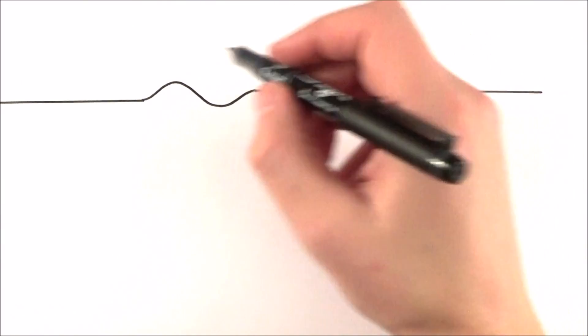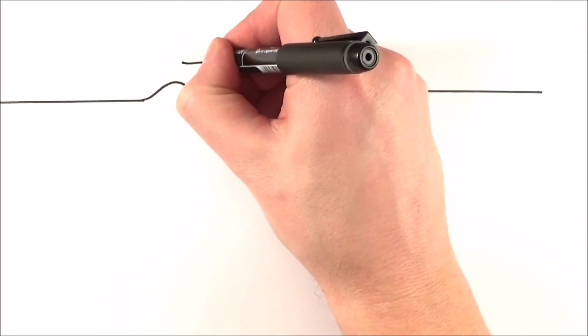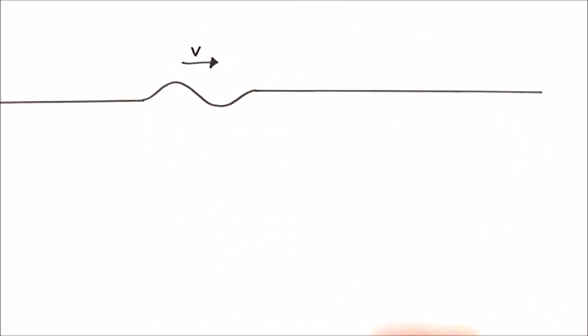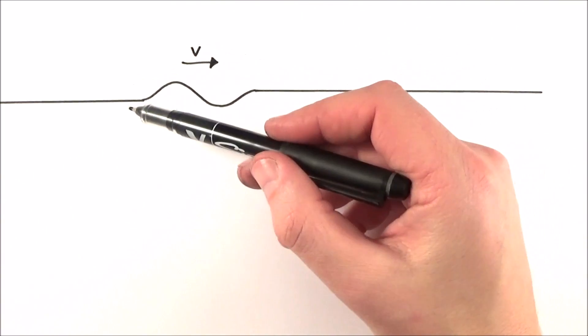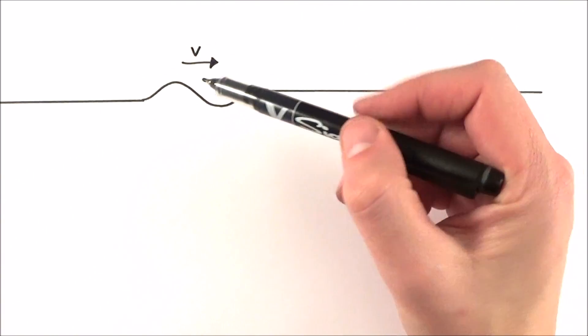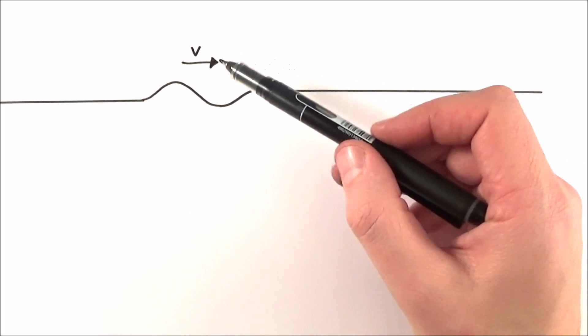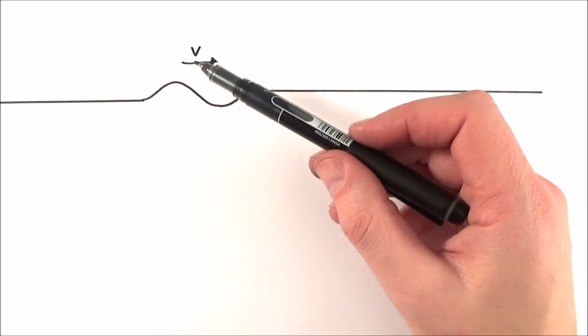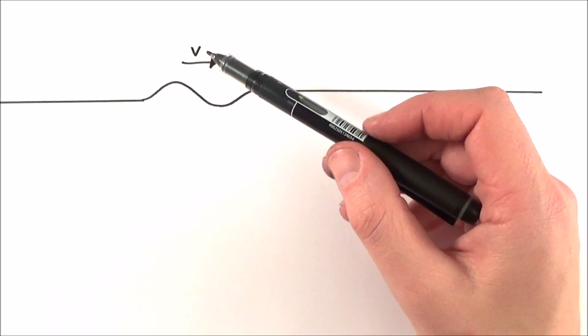Suppose we have a string and we send a progressive wave along it at a certain velocity V. Now we can work out V if we know perhaps the frequency and the wavelength, but there are certain things that limit or tell us what the speed of that wave is going to be.